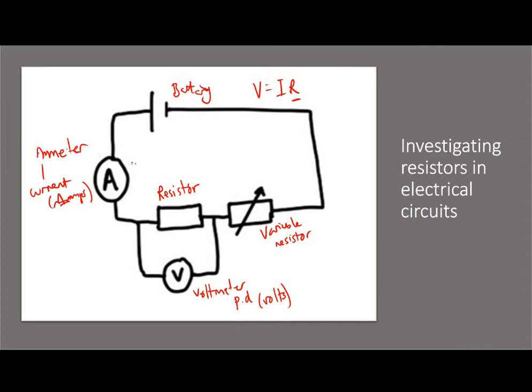Now, what we'd also be interested in is what happens when current flows the other way. To do that, all we would need to do is swap round the connection terminals at the battery. So we would change these wires round — put the wire into the other side of the battery — and that would allow the current to flow in the opposite direction.